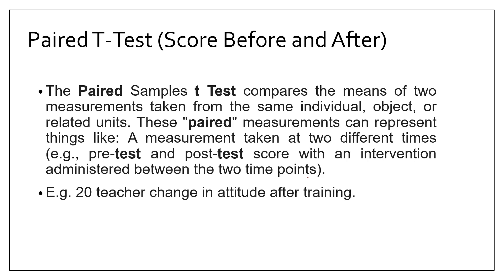The other type of t-test is the paired t-test. We use this when we want to test the same variable in the same dataset under two different conditions — like before training and after training, or before a midterm and after. For example, suppose 20 teachers in an organization are assessed on their attitudes toward a newly launched software, scored on a scale of one to five.